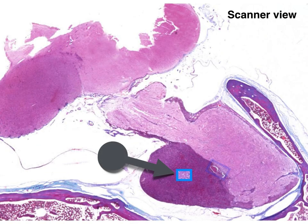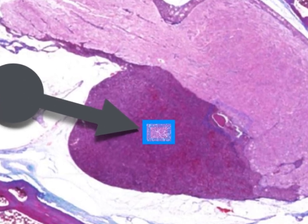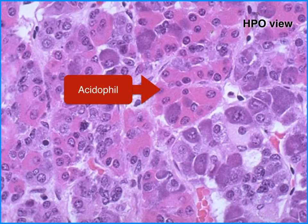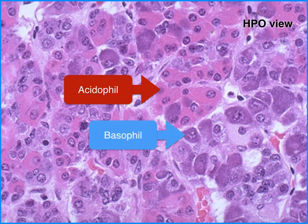Now let's move to the part of the anterior pituitary gland called the pars distalis. At high magnification, three types of cells are visible. The first is the acidophil, as shown by the red arrow. The acidophils appear as cells with pink cytoplasm and dark nuclei. These cells secrete growth hormone and prolactin. Shown by the blue arrow is the cell known as the basophil. In contrast to the acidophil, basophils appear as darker cells with purple cytoplasm. They secrete TSH, ACTH, FSH, and LH.